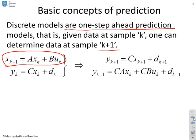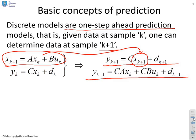I can obviously find the output one sample ahead by writing y_{k+1} = Cx_{k+1} + d_{k+1}, and where I've got this x_{k+1} here, I can substitute in from there. Then what I get is y_{k+1} = CAx_k + CBu_k + d_{k+1}. Hopefully that was obvious to everybody, so I've done it fairly quickly.